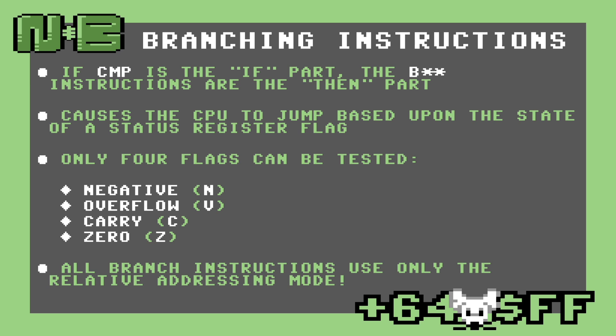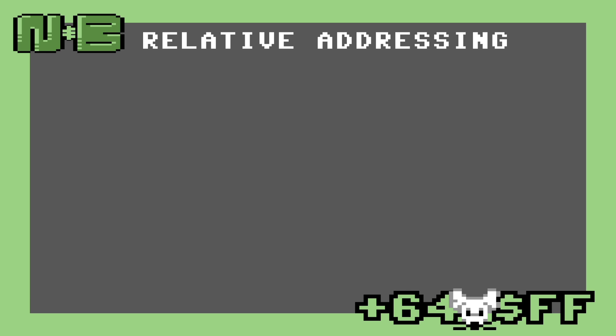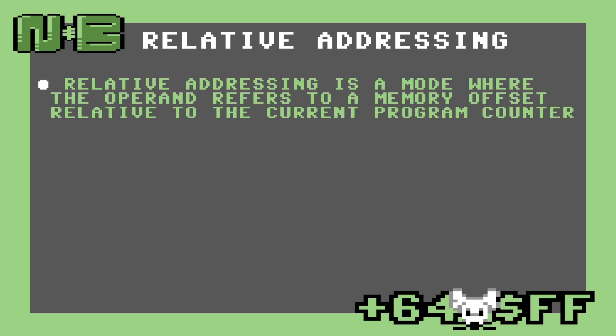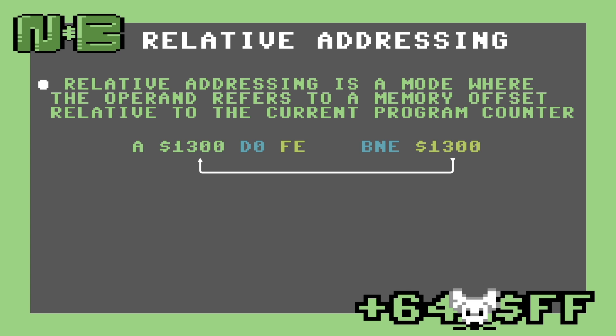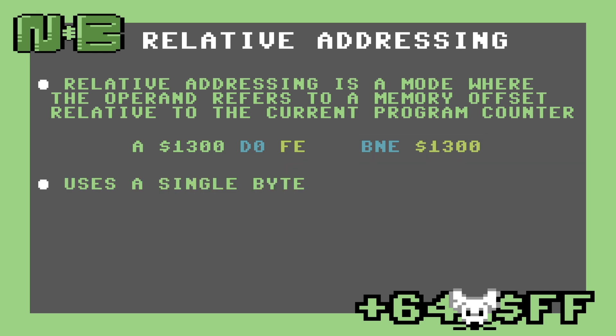All of these instructions work in the relative addressing mode. So what is relative addressing? Relative addressing is a mode where the operand refers to a memory offset relative to the current program counter. Consider this BNE instruction — this is effectively an infinite loop that jumps back to itself. This much is obvious from the assembly that we type in, but the assembled instructions take up two bytes instead of three. This is because the relative addressing mode uses only one byte to represent the address to jump to.